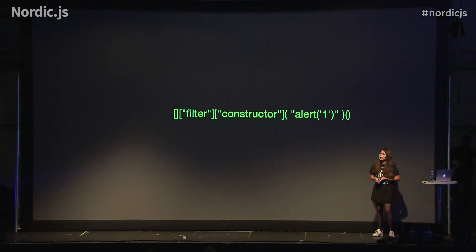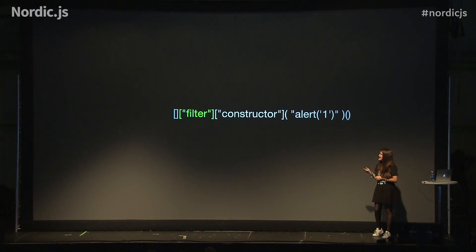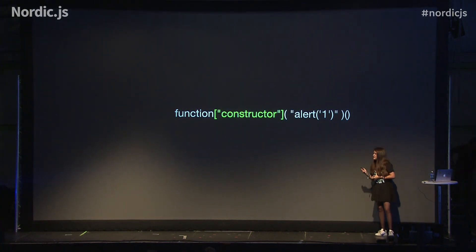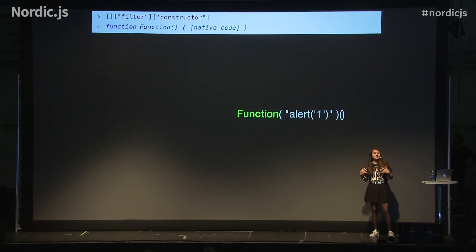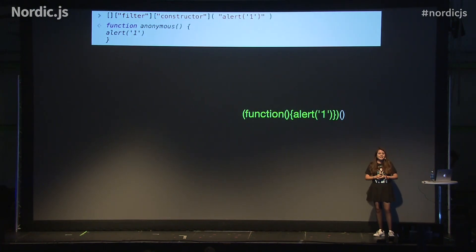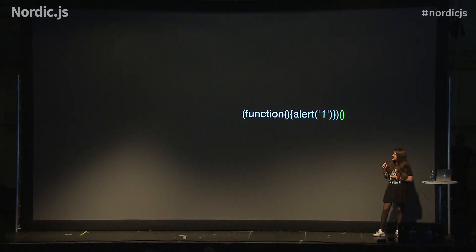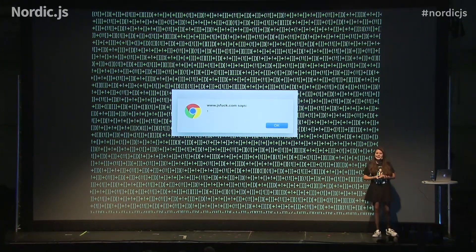This small piece of code will just do an alert(1) in your browser. The first part — the square brackets — is just an empty array. The filter segment is just trying to access the filter property of that empty array, which is a normal function. The constructor part is trying to get the constructor of functions, and the constructor of functions can take as a parameter a script that will return a new function with that script as its body. The last parentheses are just automatically executing that new function — and therefore this piece of code will just do an alert(1) in your browser. JavaScript, right? We love it and hate it.